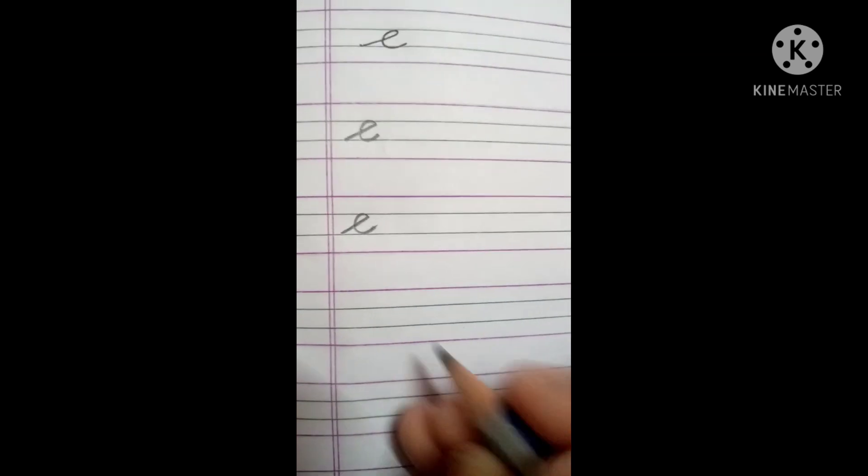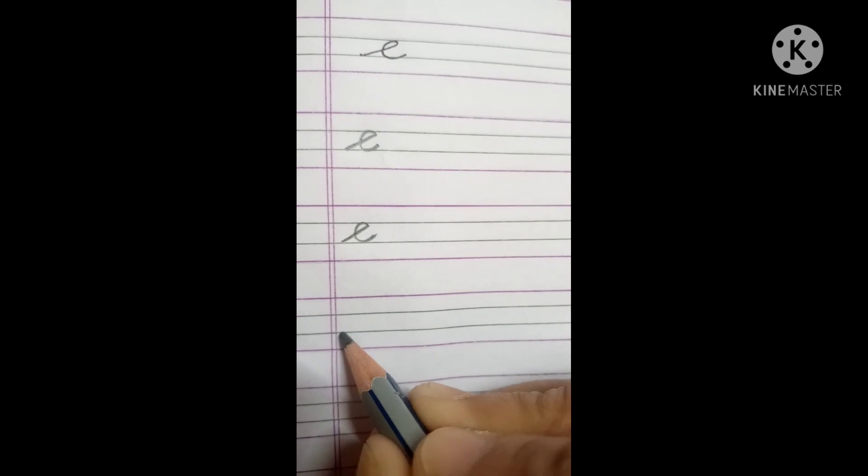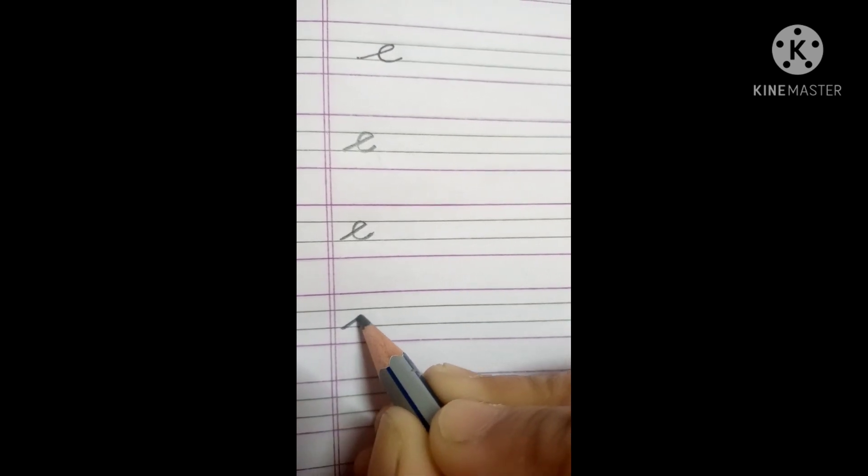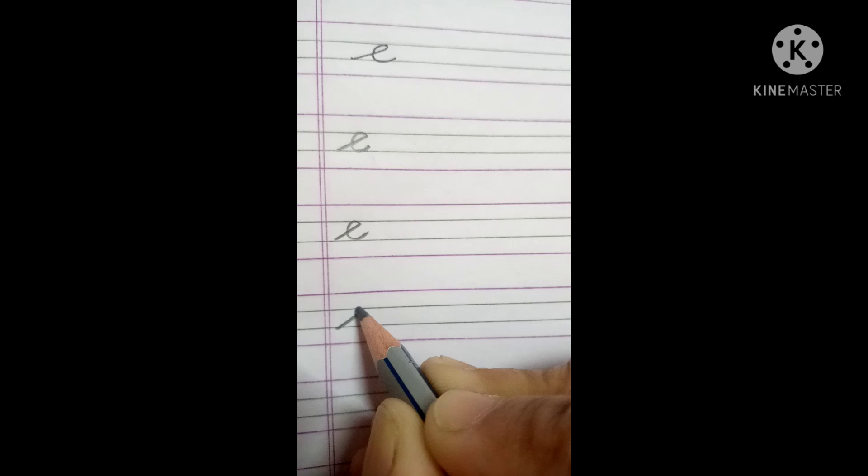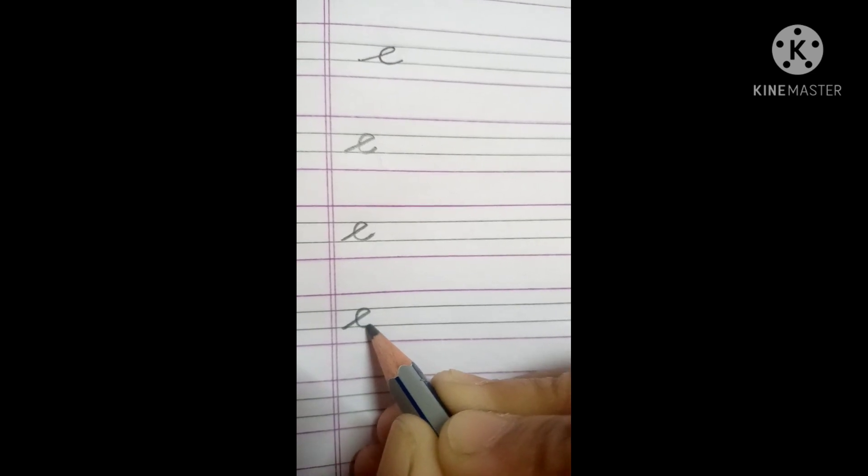E. Cursive letter E. Little slanting line, then turn, and make a curve.